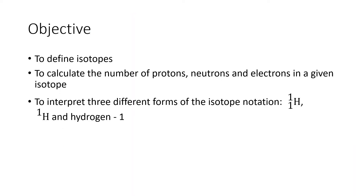Our objectives are to define what isotopes are, to figure out how many protons, neutrons, and electrons are present in a particular isotope, and then to make sure we can use all three standard forms of the isotope notation: the one that has the two numbers stacked, the one that has just a single number and the element symbol, and then the one where we use the element name with a single number.